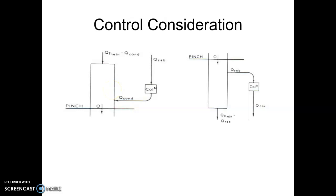In the same way, if the column is placed below the pinch, we integrate the reboiler and supply the utility to the condenser. But in both cases, the amount of energy required overall combined for the process and distillation column would be equal to QH minimum and QC minimum.